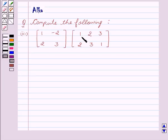The first matrix: 1, minus 2, 2, 3. The second matrix: 1, 2, 3, 2, 3, 1. Now we have to find the product of the given matrices. Let's start with the solution.